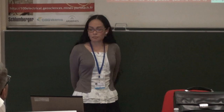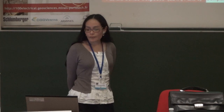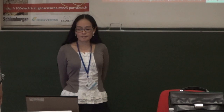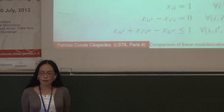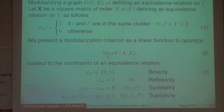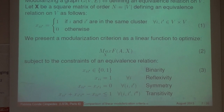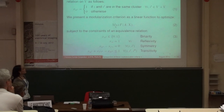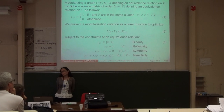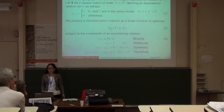An equivalence relation can be mathematically represented by a matrix x, a square matrix of size n, where n is the number of nodes, whose general term x_{i,i'} is one if nodes i and i' are in the same cluster and zero otherwise. We are going to represent our modularization criteria as a function f to maximize, a function of a — the adjacency matrix of the graph — and of x, the partition, the equivalence relation. x has to verify the constraints of an equivalence relation. However, solving this linear problem is NP-complete, so we are going to choose heuristics to approximate the optimal partition.